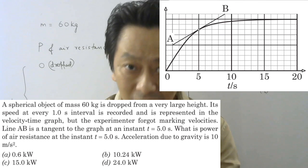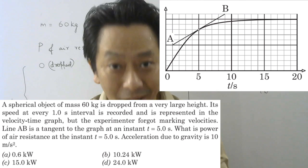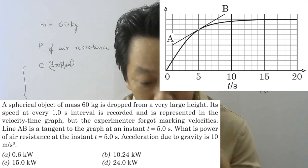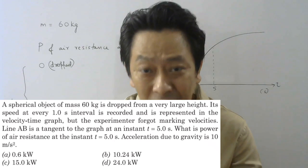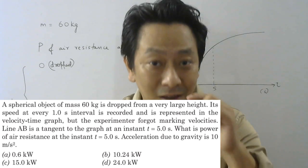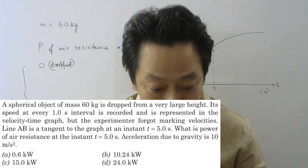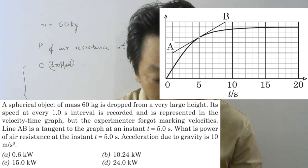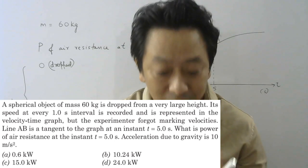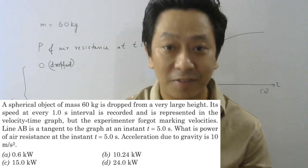For the y-axis they are using velocity and for the x-axis they are using time. But the experimenter forgot to mark the values — he has put marks but forgotten to put the value of velocity for one division. The line AB is a tangent to the graph at instant t equal to 5 seconds. What is the power of air resistance at time t equal to 5 seconds?